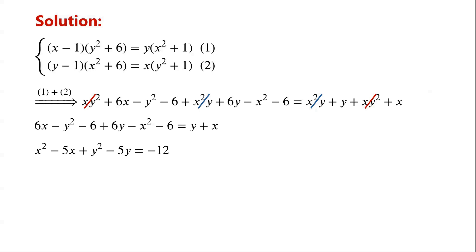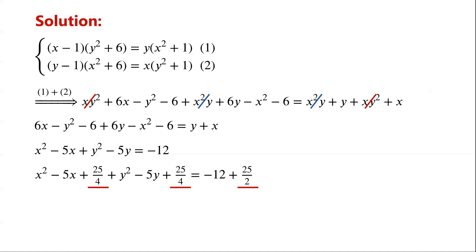Now the left-hand side has X² − 5X. We can complete the square by adding (5/2)², that is, adding 25/4. We can do the same for Y² − 5Y. So we add 2 × (25/4) on each side of the equation. X² − 5X + 25/4 equals (X − 5/2)², and Y² − 5Y + 25/4 equals (Y − 5/2)². And −12 + 25/2 equals 1/2.